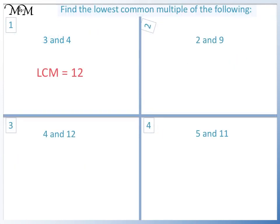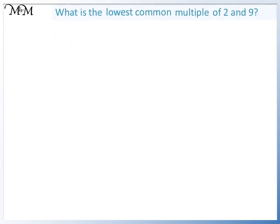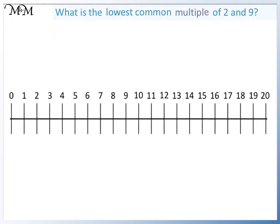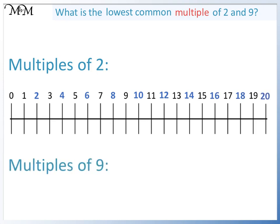Question 2. Multiples of 2 are 2, 4, 6, 8, 10, 12, 14, 16, 18, 20. Multiples of 9 are 9 and 18. The lowest common multiple is 18.